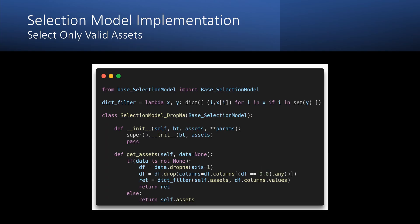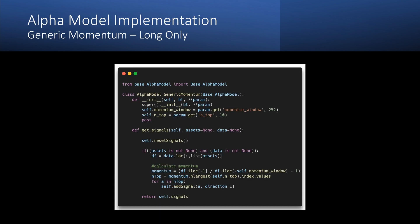The selection model could be very simple. To be sure that all our data contains valid information, we are going to drop all assets with missing data or where the price is zero.